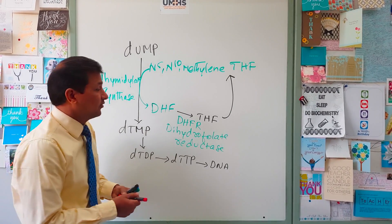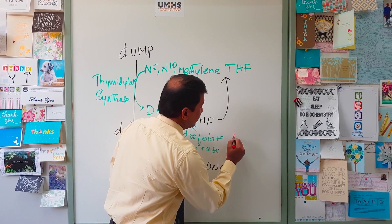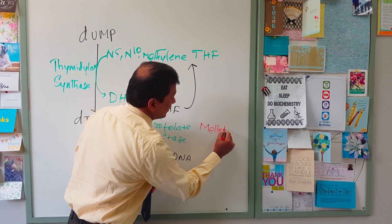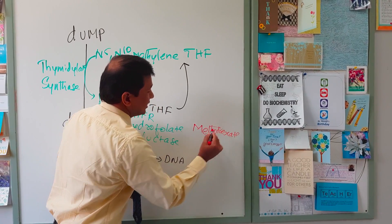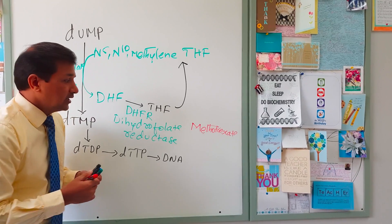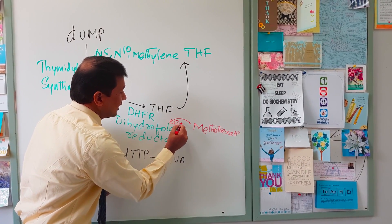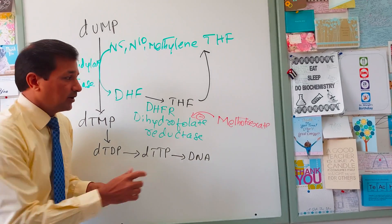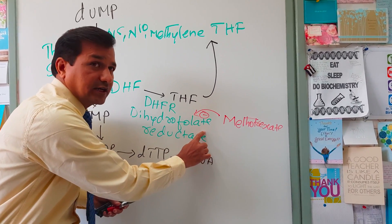In this reaction, two protons are also taken from tetrahydrofolate, releasing it as dihydrofolate — something unique to this reaction. Third important point: dihydrofolate is converted to tetrahydrofolate by dihydrofolate reductase. Now let us look at the drugs that inhibit these enzymes. We have methotrexate, which is an anti-cancer drug.